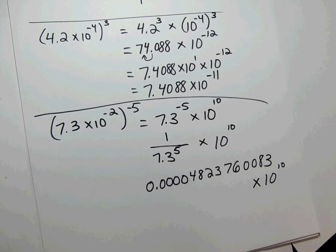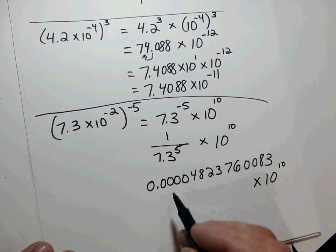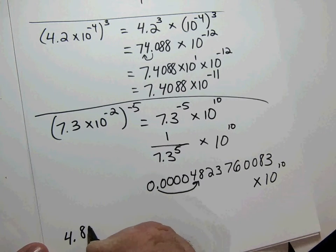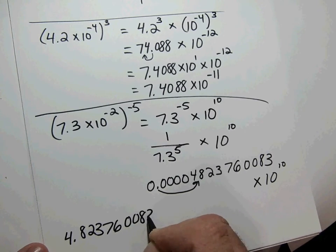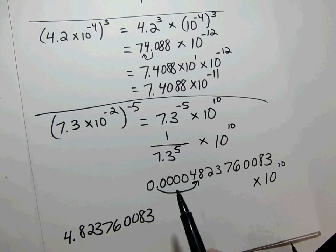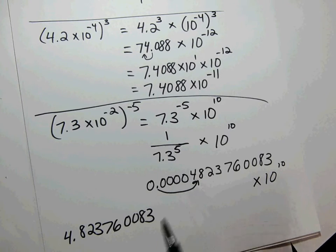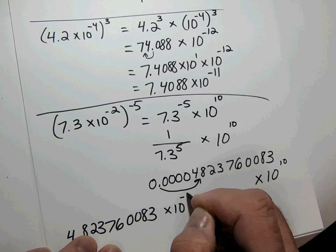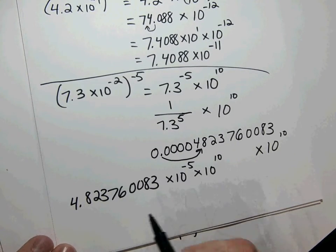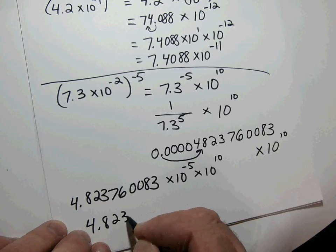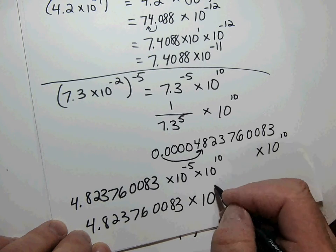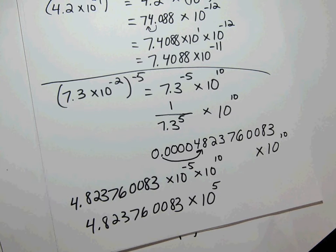That leading number is not in scientific notation. Moving the decimal five places gives 4.823760083 times 10 to the negative 5. We already had times 10 to the 10th, so combining: negative 5 plus 10 gives a final answer of 4.823760083 times 10 to the positive 5.